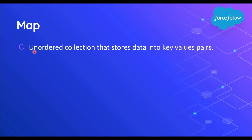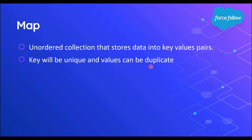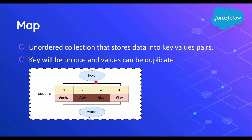Map is mostly used collection in real-time applications while implementing complex requirements in triggers or classes. In Apex, a map is a type of unordered collection that stores data into key-value pairs, where each key will be unique and values can be duplicate. If you want to store a combination of two values in a single container, then map can be used. For example, we can store student names and their roll numbers together, using roll numbers as the key and student names as the value.